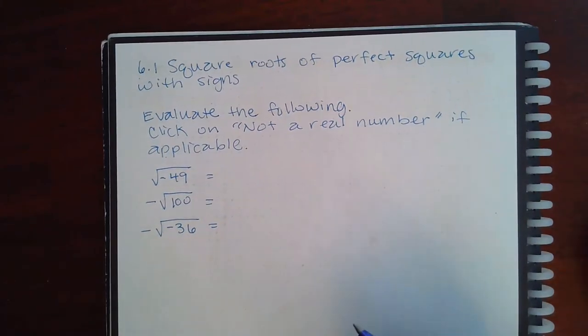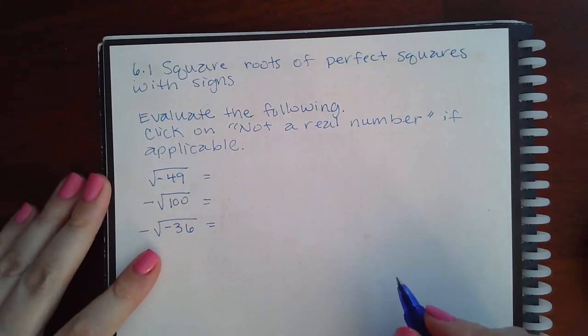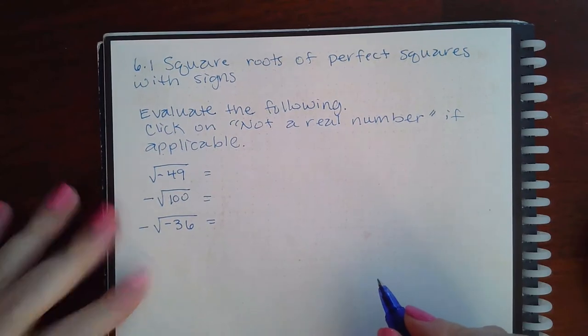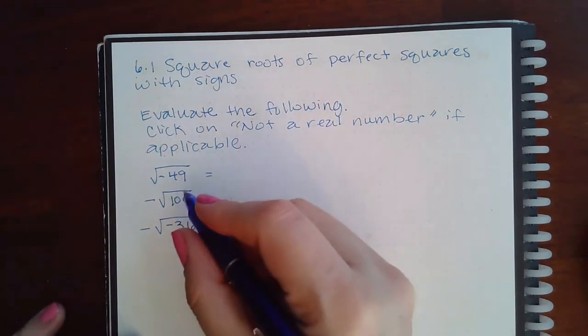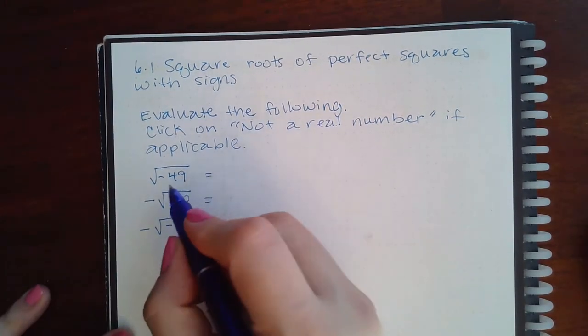So in this problem we have 6.1 square root of perfect squares with signs. It says evaluate the following, click on not a real number if applicable, and one thing to know is that you cannot take the square root of a negative number.